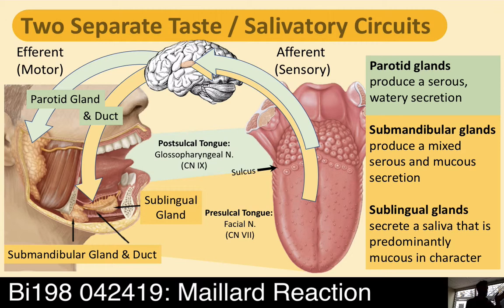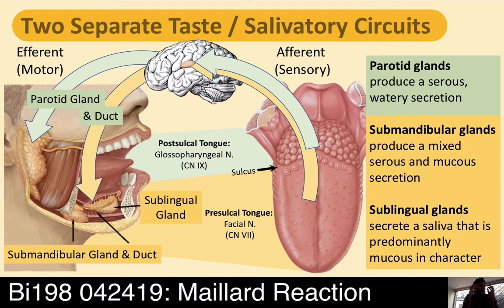Afferent means sensory moving up to the brain. Efferent is motor — action that comes down from the brain. Those same nerves from the pre- and post-sulcal tongue conduct motor neurons down to the salivary glands. There is the parotid gland — that gland where when you bite into a lemon you feel kind of bad, kind of go cringey in the back at the angle of your jaw. That's the parotid gland shivering, and it brings saliva into the back of the mouth — a rather watery secretion.